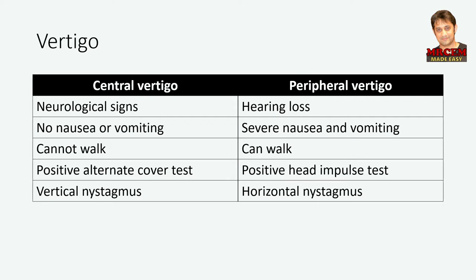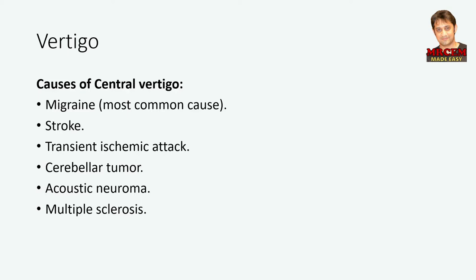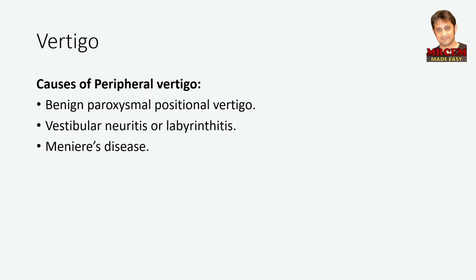The causes of central vertigo include migraine, stroke, transient ischemic attack, cerebellar tumor, acoustic neuroma, and multiple sclerosis. Note that migraine is the most common cause of central vertigo. The causes of peripheral vertigo include benign paroxysmal positional vertigo, vestibular neuritis or labyrinthitis, and Meniere's disease. In the exam, it is important to know how to differentiate between central and peripheral vertigo, and to differentiate between the different causes of peripheral vertigo.